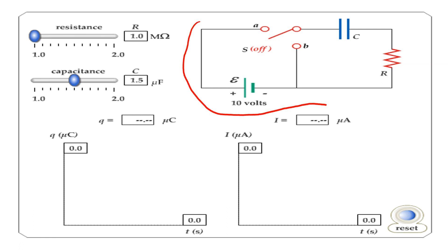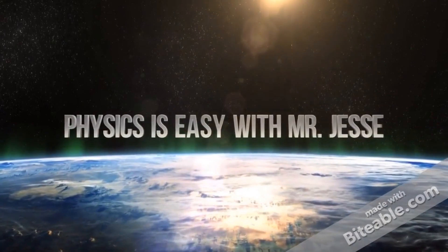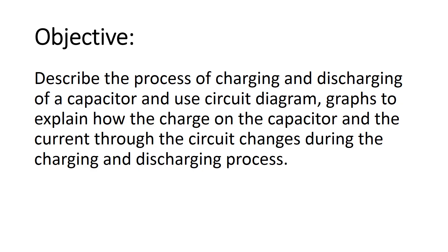This circuit diagram shows the charging and discharging process of a capacitor, which we are going to use in this episode of Physics is Easy with Mr. Jesse. In this tutorial we are going to describe the process of charging and discharging of a capacitor using a circuit diagram and graphs to explain how the charge in the capacitor and the current through the circuit changes during the charging and discharging process.